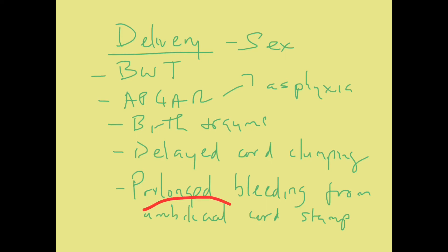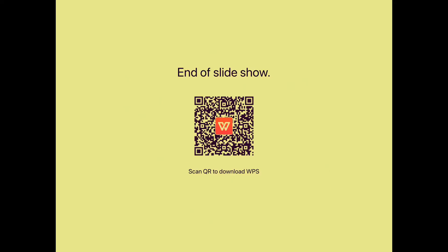Prolonged bleeding from the umbilical cord stump is important to check for liver disease, because in liver disease there is bleeding diathesis, and in the neonatal period this manifests with prolonged bleeding from the umbilical cord stump.